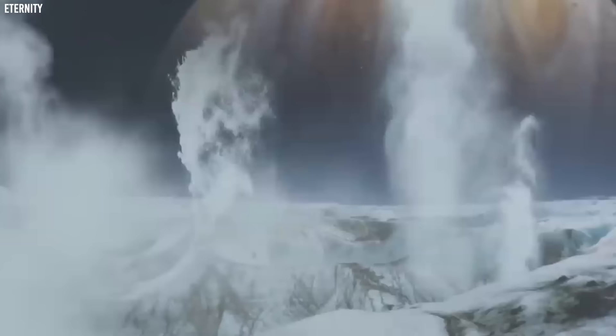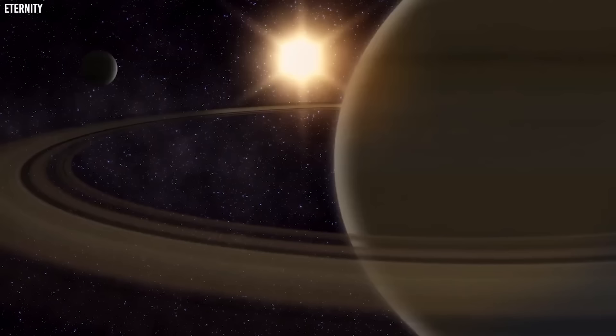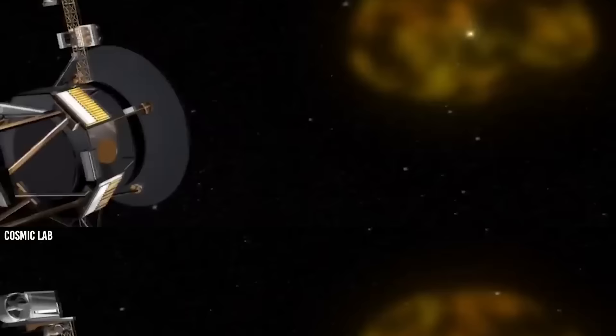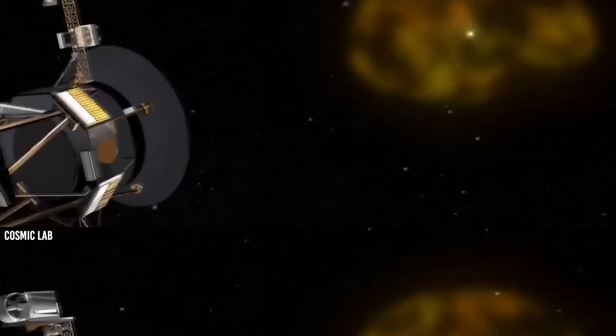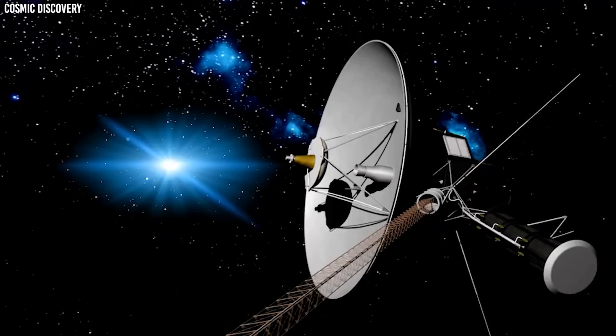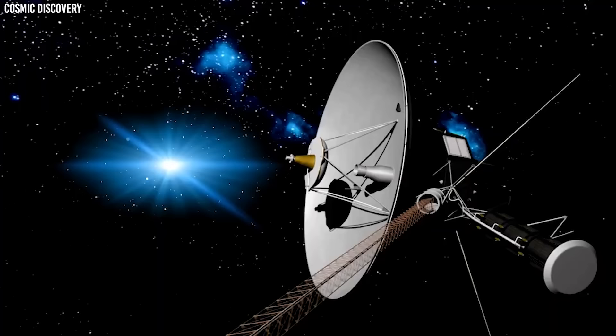In the long term, Voyager 1's mission is limited by the lifespan of its nuclear batteries, which generate electricity from plutonium decay. The spacecraft produces 4 watts of heat less every year, prompting NASA to shut down redundant systems and operate only essential instruments. While time is running out for Voyager 1, the dedicated team maximizes its scientific contributions until the spacecraft's eventual end.